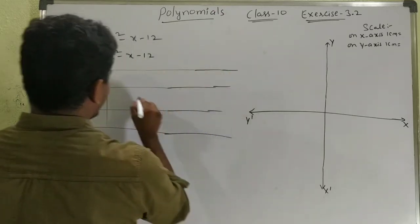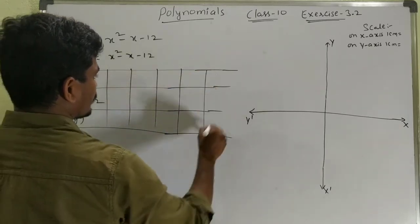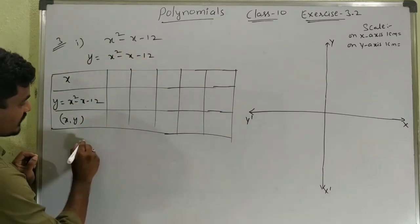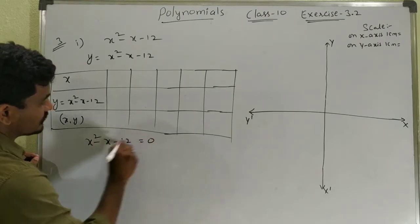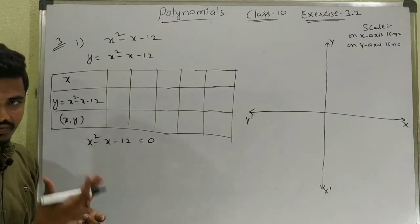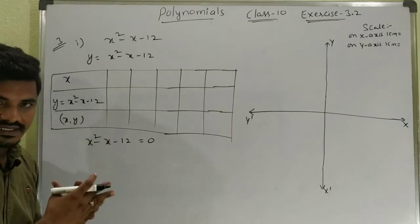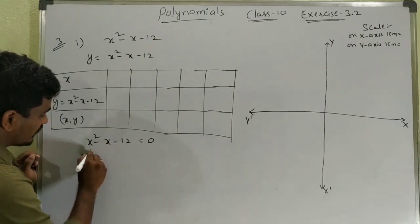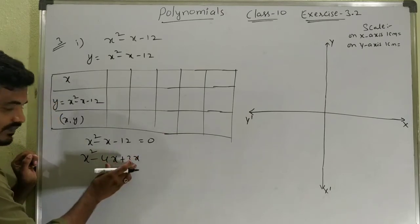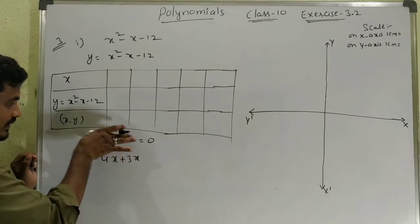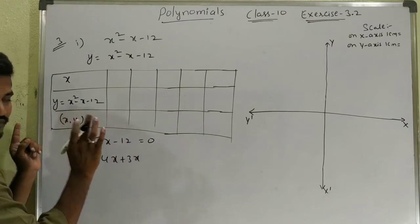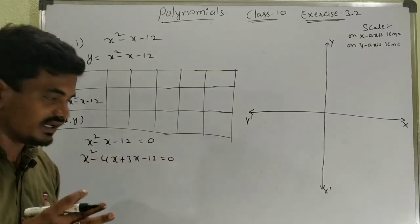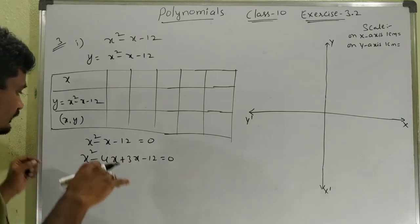We can assign numbers — this is called a t-table. First, let's factor. x² − x − 12: we have x² and −12, and the middle term to split is −x. The middle term split: x² − 4x + 3x − 12 where −4 and +3 add to −1, and the multiplication equals −12.